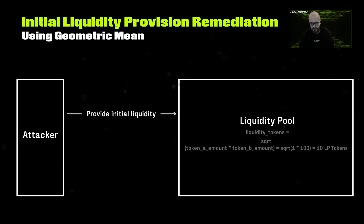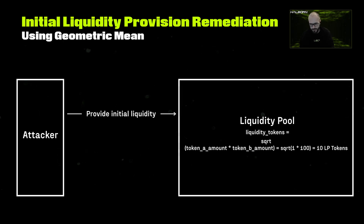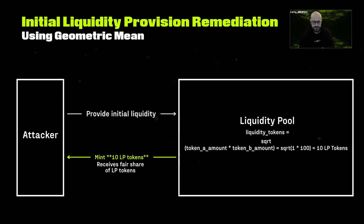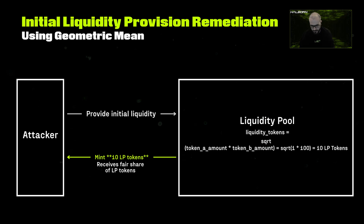The solution was using the geometric mean, which is basically a type of average that multiplies a set of positive numbers and then takes the root corresponding to the number of values. For two numbers, it's calculated as the square root of their product. For liquidity pools and AMMs, using the geometric mean to determine initial LP tokens ensures a fair representation of each token's value contribution by accounting for their proportional market values, instead of only summing token A with token B. We suggested changing the lines of code related to the calculation of LP tokens to be minted to the user, and provided the correct code implementation for that formula.